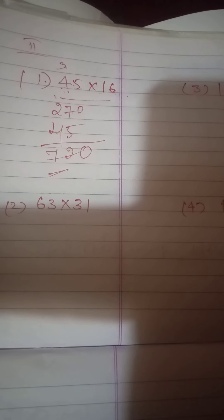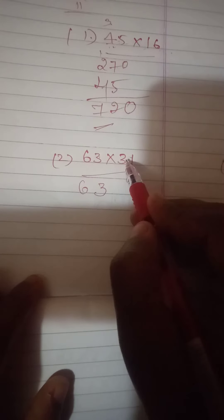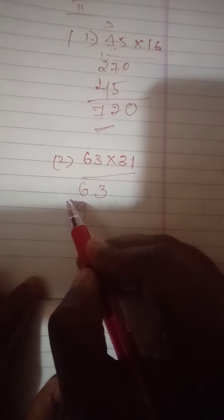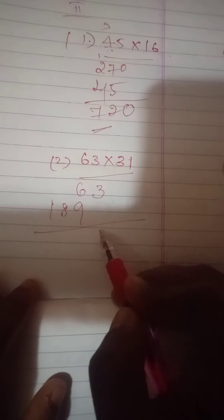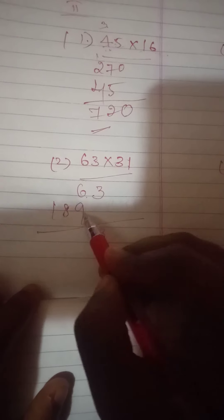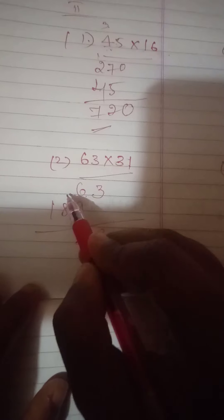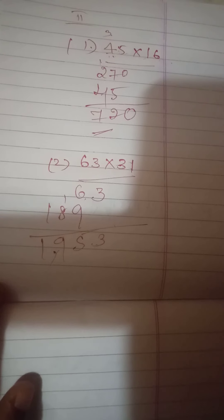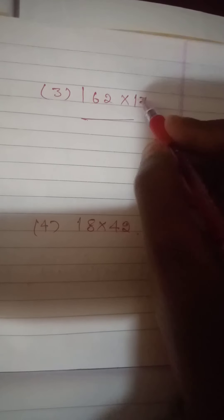Answer is 720. Next question: 1 three is 3, 1 six is 6, 3 threes are 9, 3 sixes are 18. 6 plus 9 is 15, carry 1; 8 plus 1 is 9. Answer is 1953.